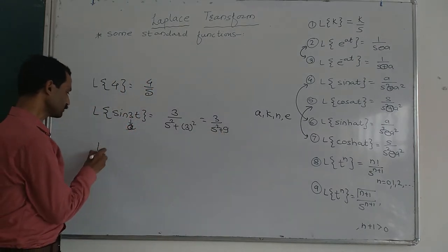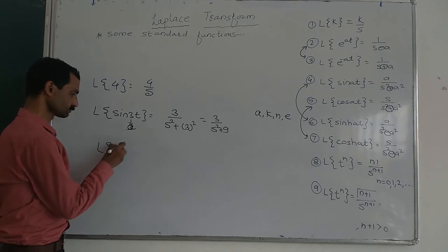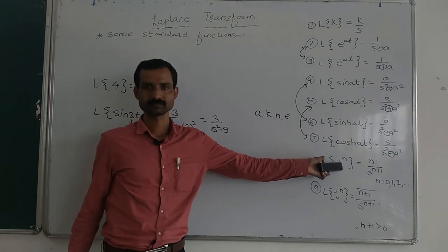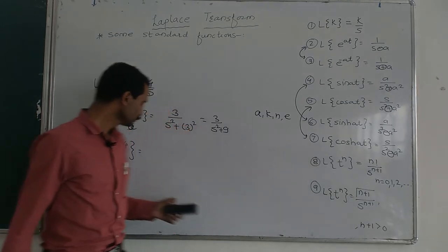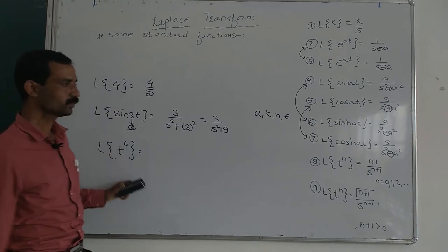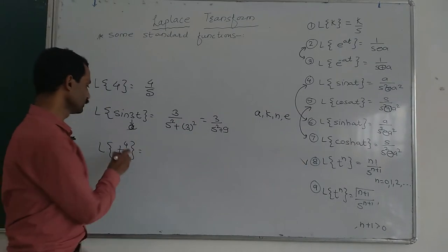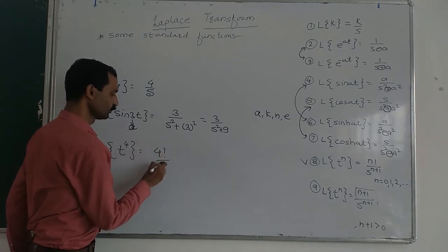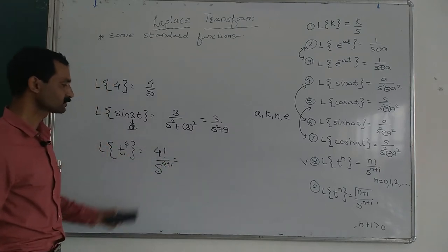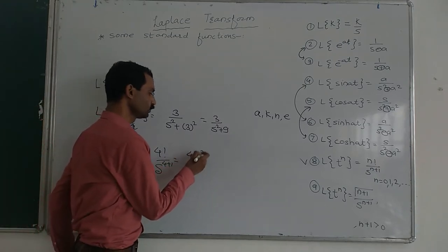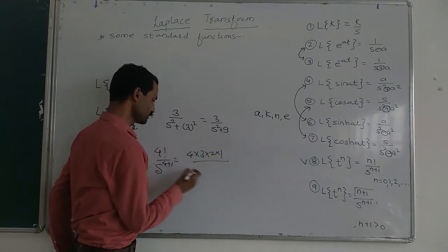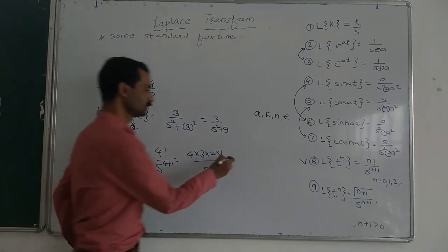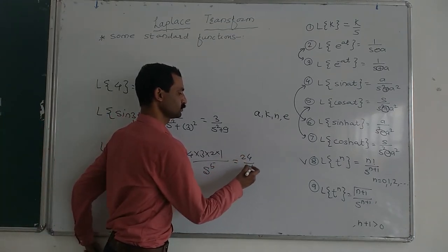If we want to find Laplace of t raised to 4, there are two formulas available. Since 4 is an integer, we use the factorial formula: Laplace of t raised to 4 is 4 factorial upon s raised to 5. Now 4 factorial equals 4 into 3 into 2 into 1, which gives 24. So the answer is 24 upon s raised to 5.